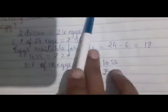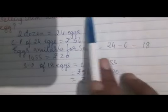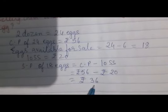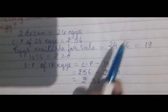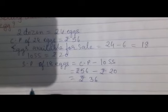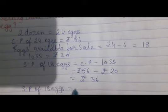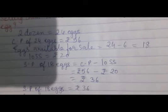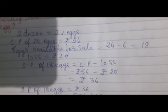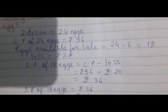Ramu brought two dozen eggs for Rs.56. Six of them broke, so 18 remained. He incurred a loss of Rs.20, so the selling price of 18 eggs is Rs.36. What was the selling price of one egg? Selling price of 18 eggs is Rs.36, so selling price of one egg will be Rs.36 divided by 18, which is Rs.2.